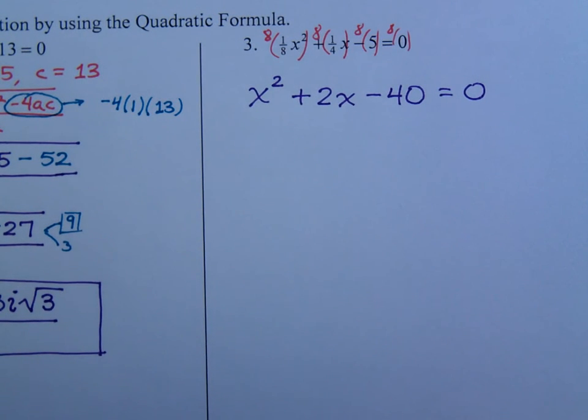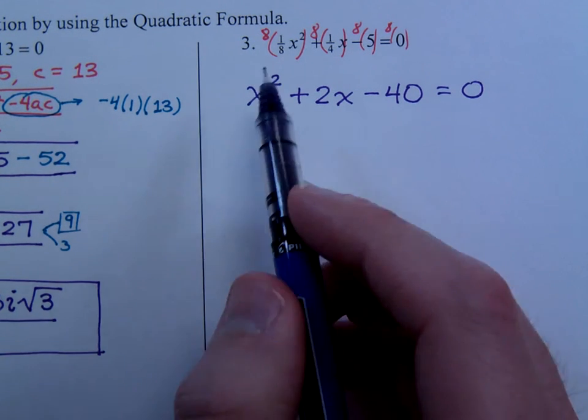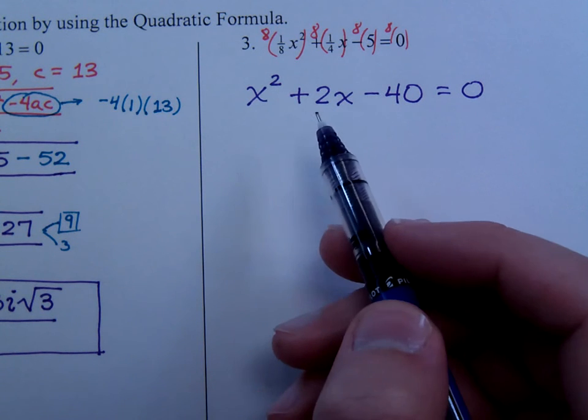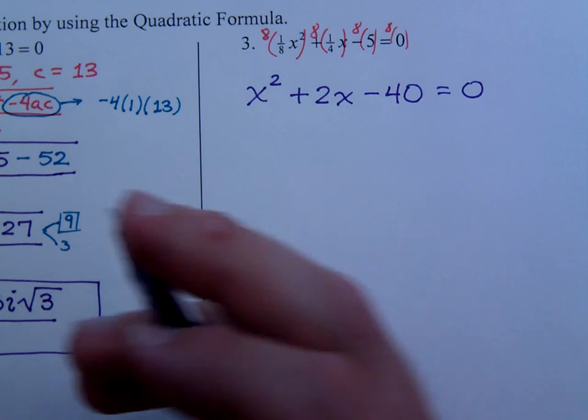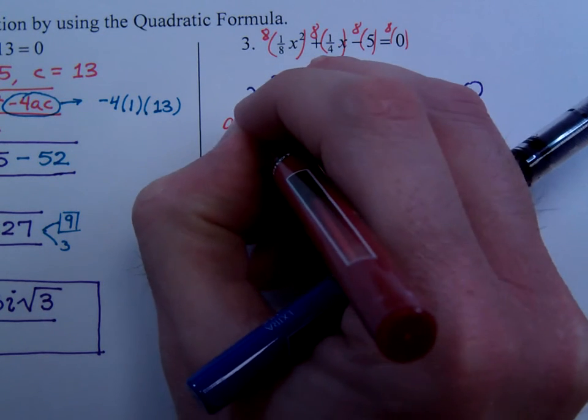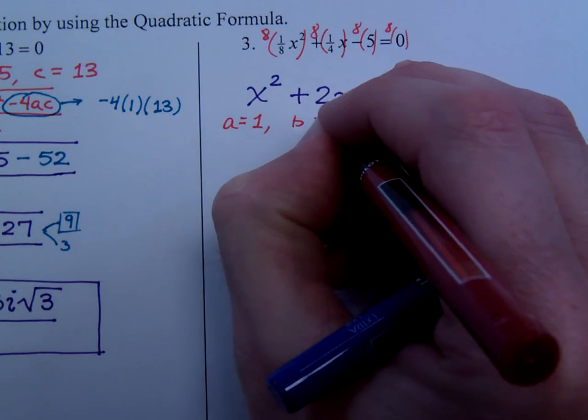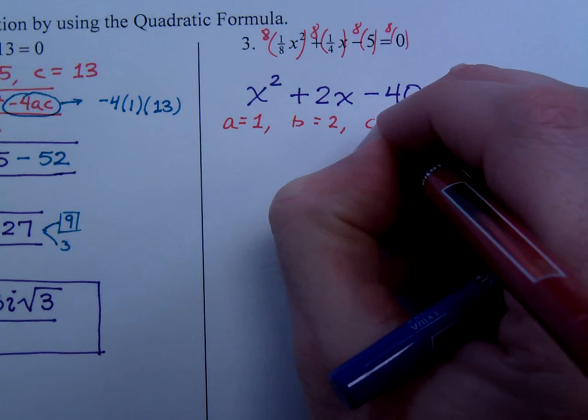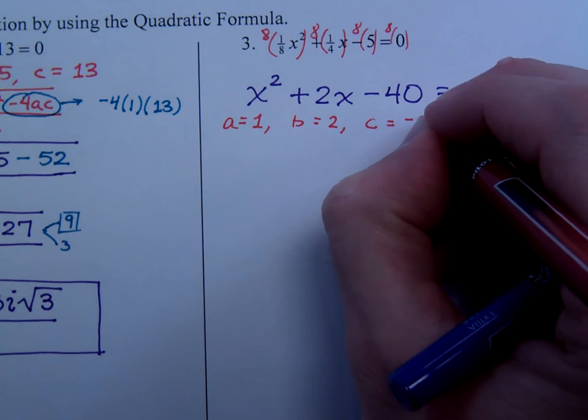When I do that, 8 times 1 over 8 is going to give me just 1, so that's 1x squared. 8 times 1 over 4 is 2, so plus 2x. 8 times 5, so that's minus 40, equals 0. Now if I were working this problem any way that I wanted to, I would definitely go about using completing the square. Because this is 1, and that's even. But since the instructions say use the quadratic formula, I guess we should do that. So a is 1, b is 2, and c is negative 40.